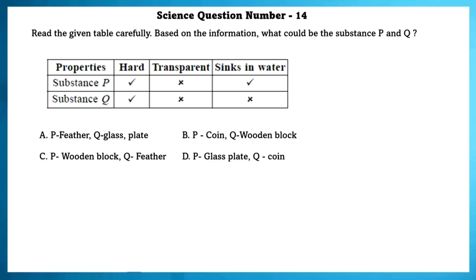Science question number 14. Read the given table carefully. Based on the information, P could be a coin and Q could be a wooden block.